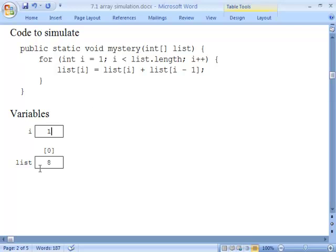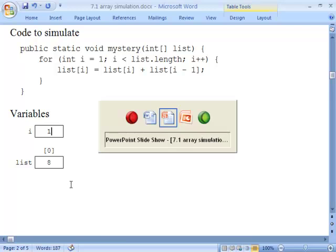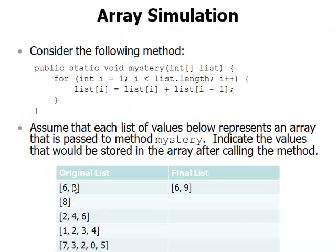In this case, there's no change to the array that was passed. So our answer for this second one is that the array still stores the value 8, just as it did before.